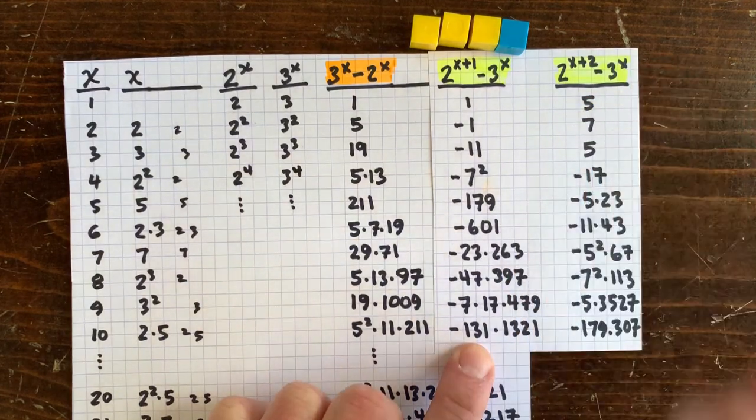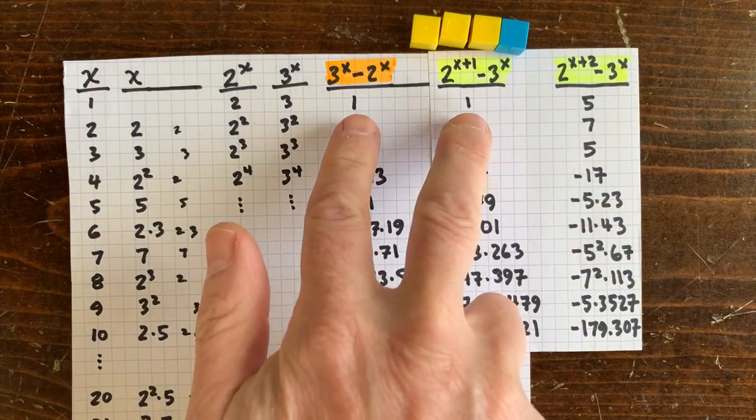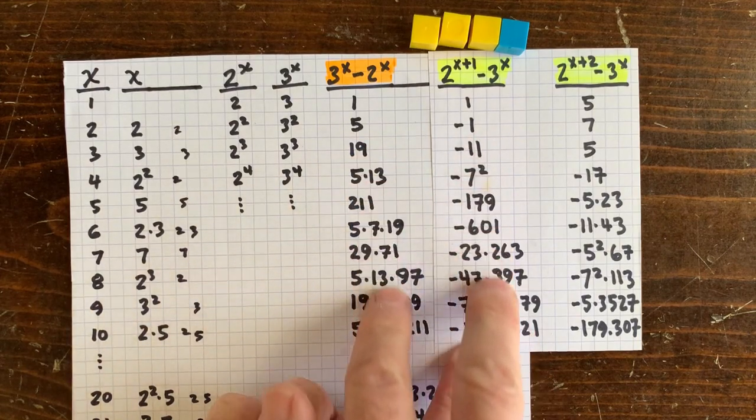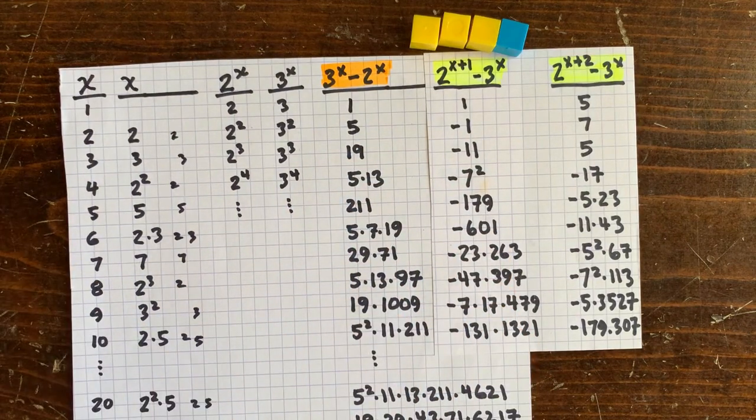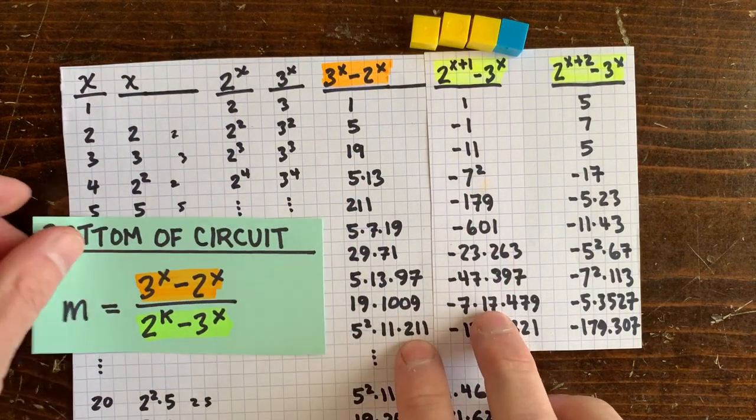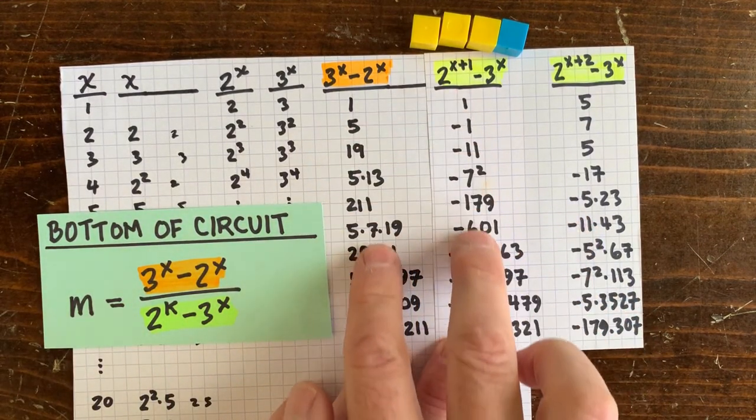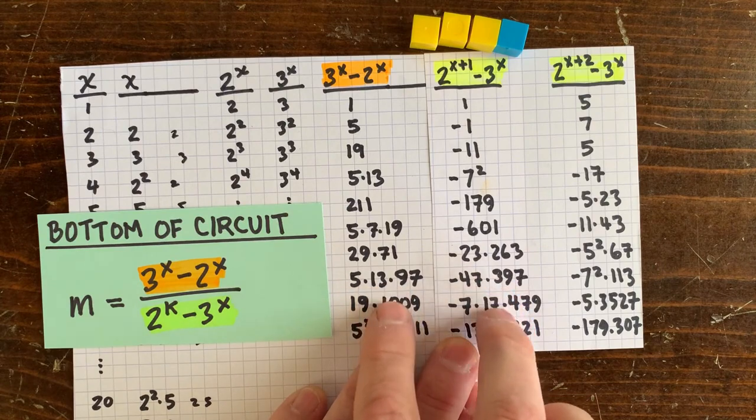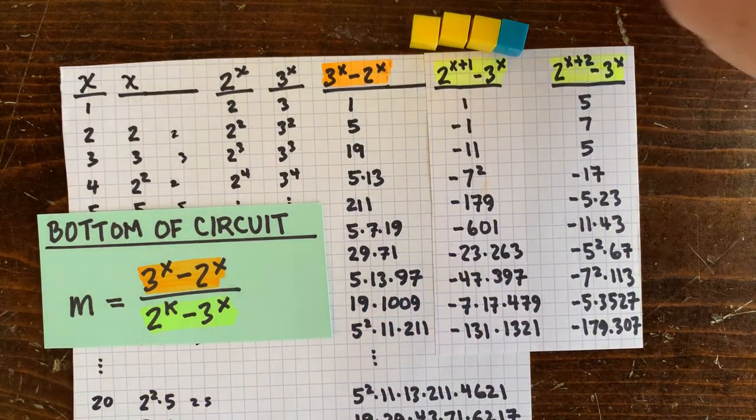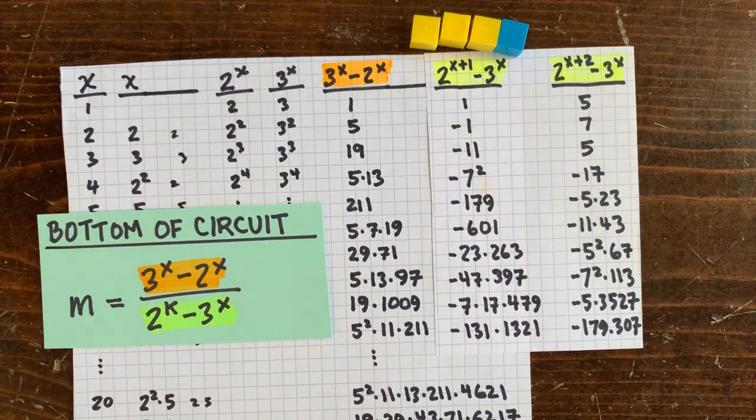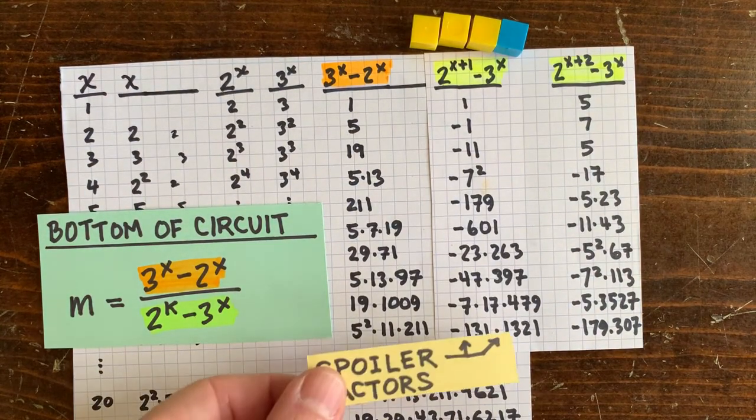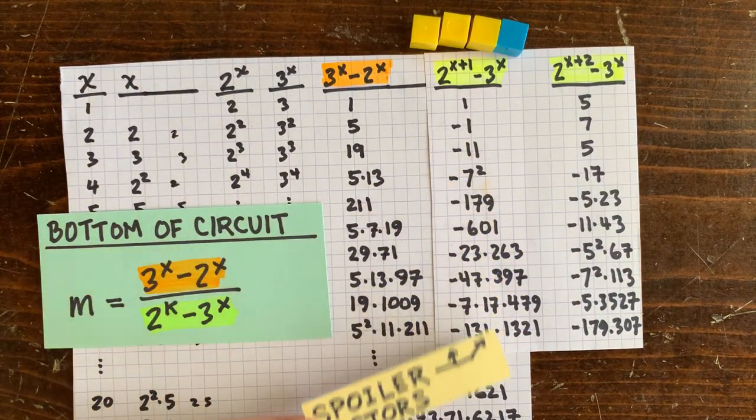But a really cool thing is to compare the factors of the numerator, 3 to the x minus 2 to the x, with the denominator. And if we do that, you can see every factor in the denominator seems to be a spoiler factor. The numerator and the denominator have no factors in common at all. That's what they call co-prime.